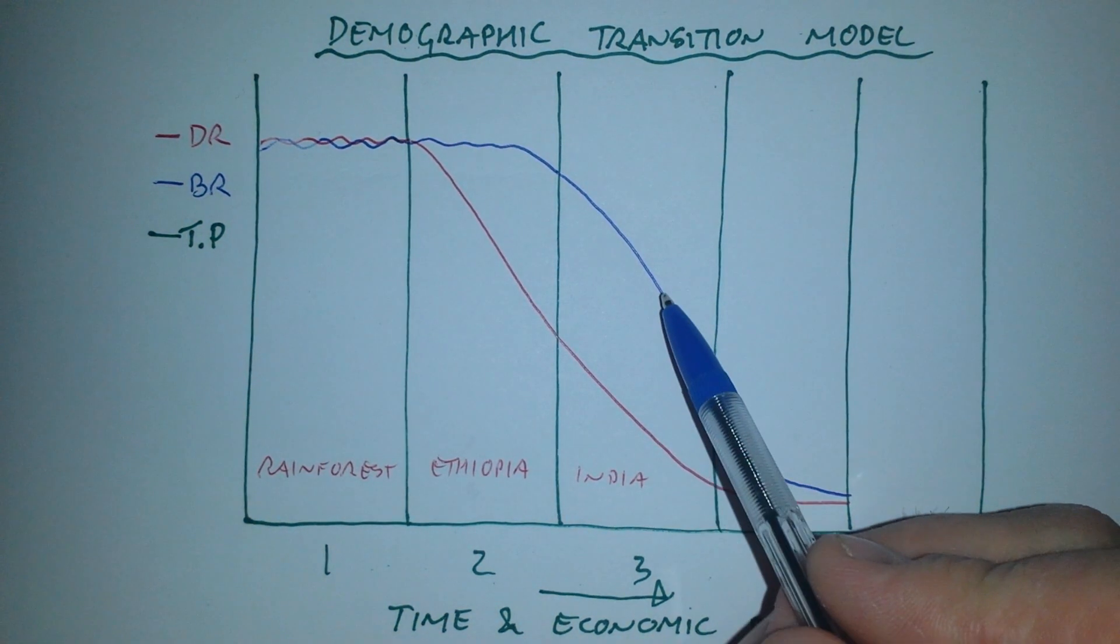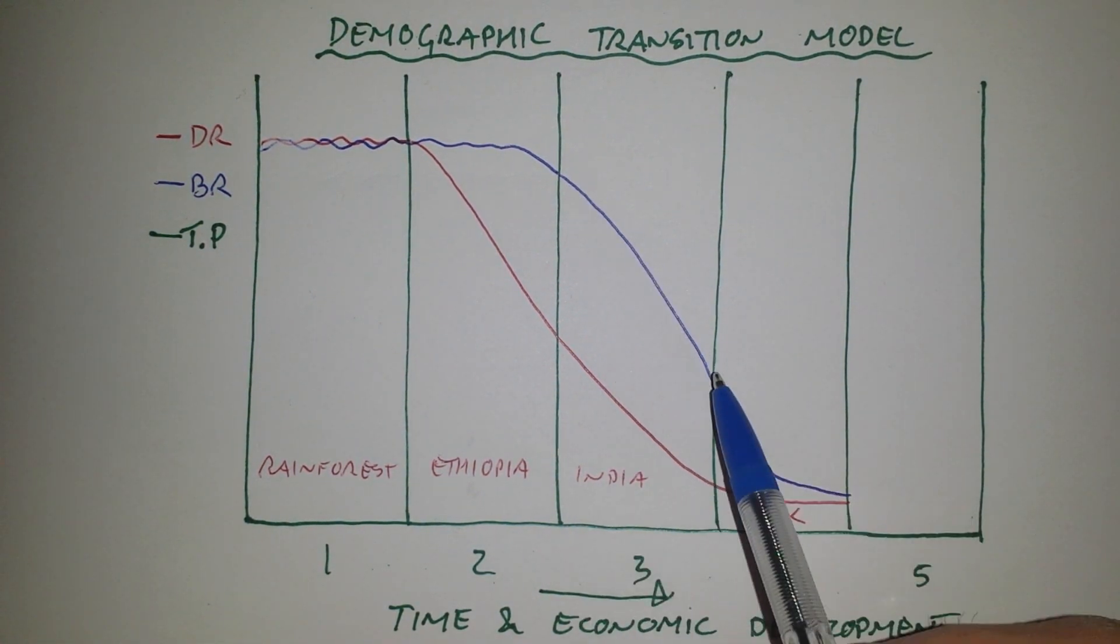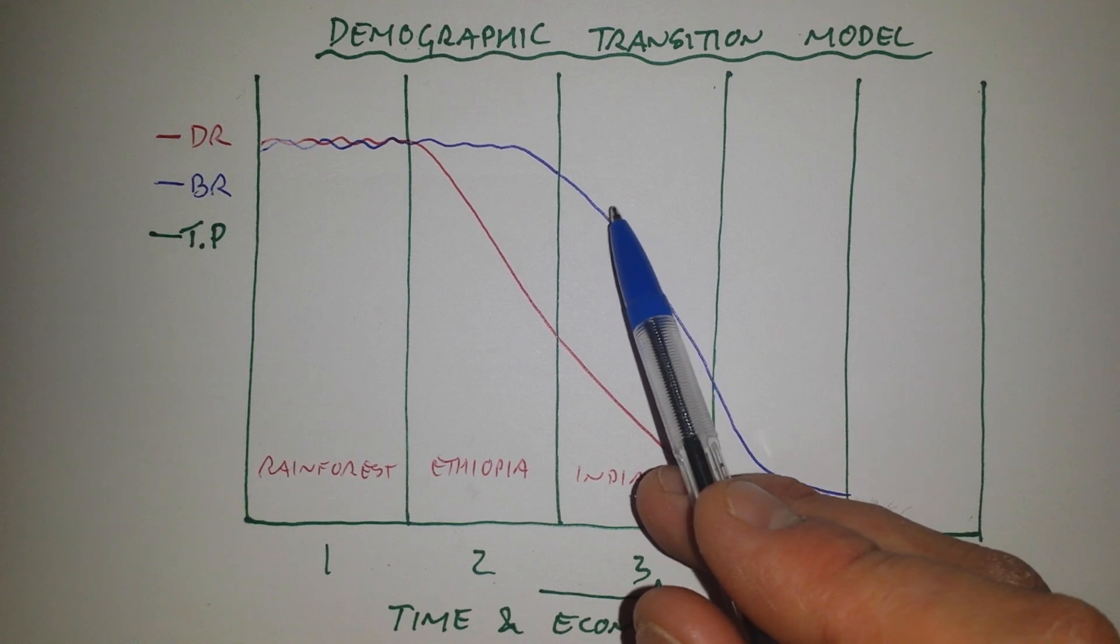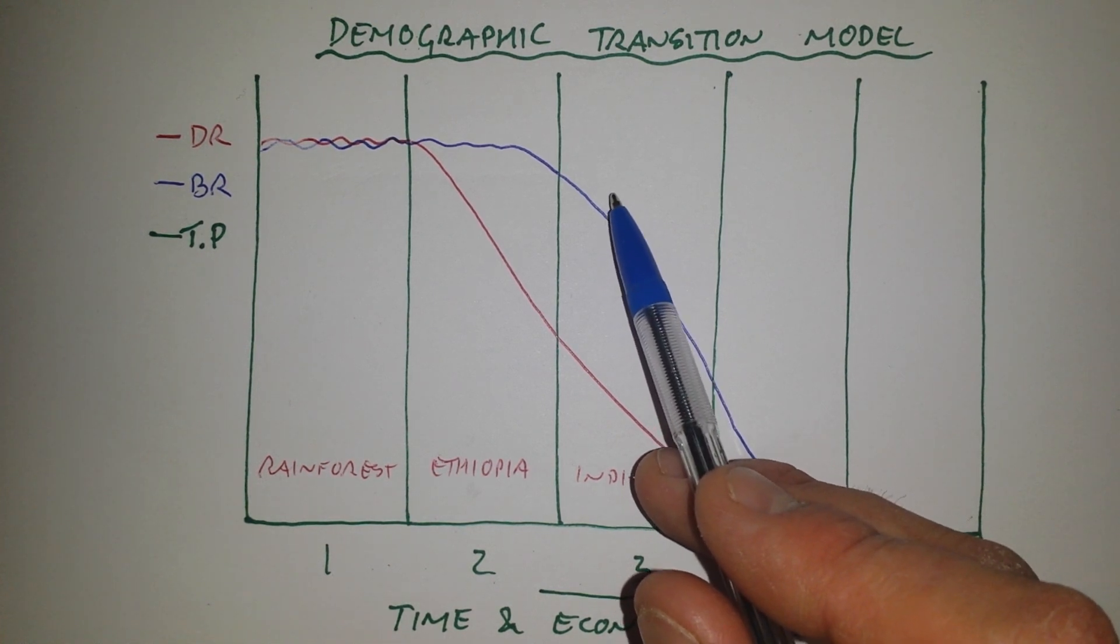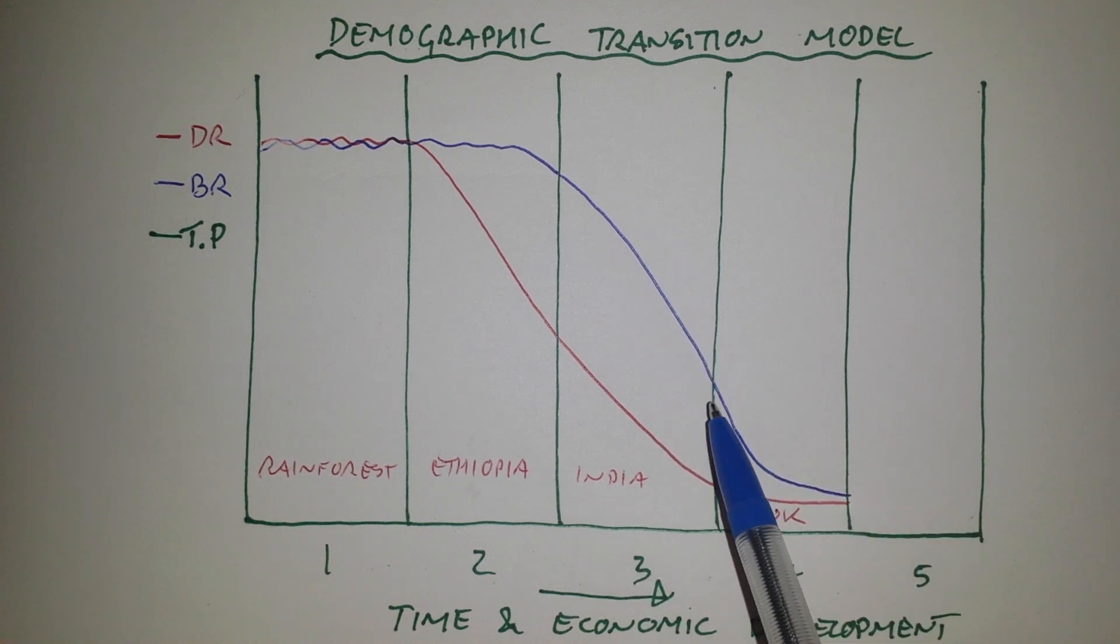Now, stage three is classically where India is because they're now really tackling their birth rate. They're bringing fertility rates down from the average woman having six or seven children in their lifetime to now maybe only having three or four. So they're really making some progress.